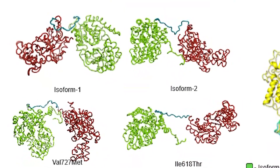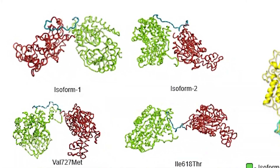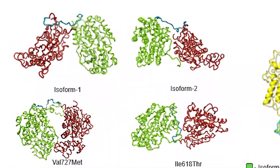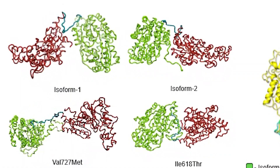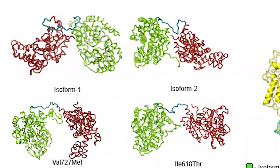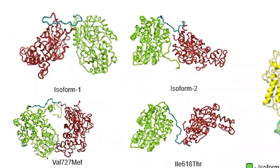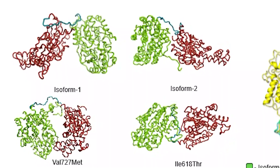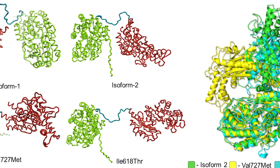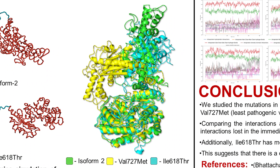As you can see, isoform-1 and isoform-2 show different dynamics based on the collapsing of the domains, and similarly with the valine-727 mutant and the isoleucine-618 mutant. Comparing the mutant structures — valine-727, isoleucine-618, and isoform-2 wild type — we see stark differences in the domains with respect to the epimerase or the kinase.